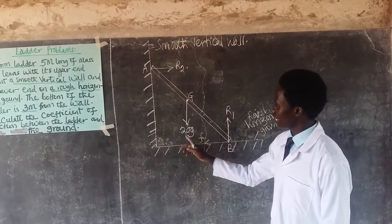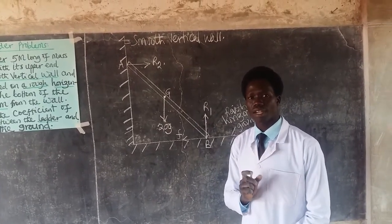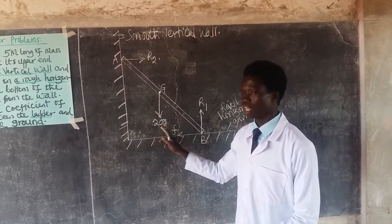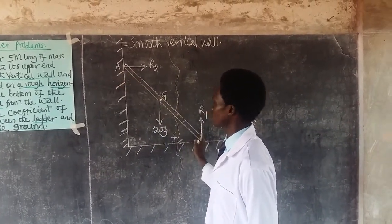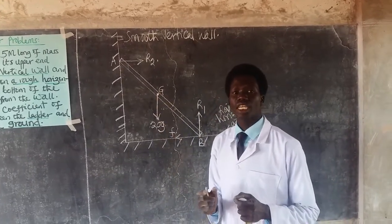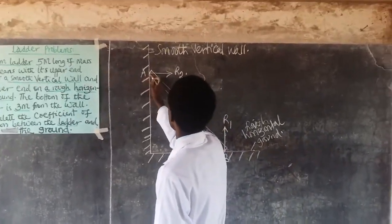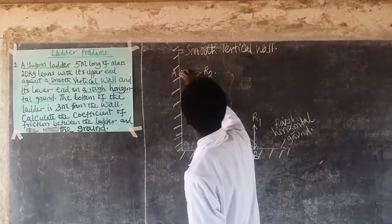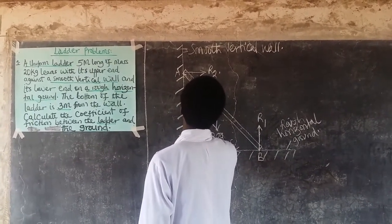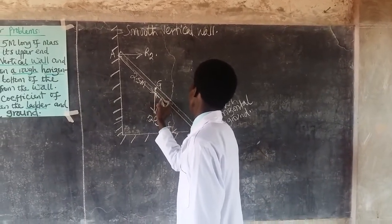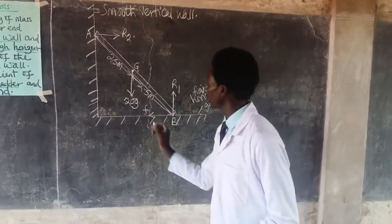Since the ladder is uniform, its weight is 20G (mass times acceleration due to gravity). Being 5 meters long, the center of gravity is at 2.5 meters from each end. So from point A to the center of gravity G is 2.5 meters, and from G to the other end, which we call point C, is also 2.5 meters.